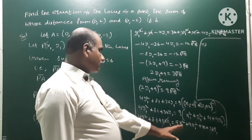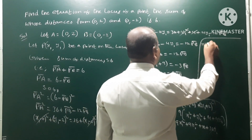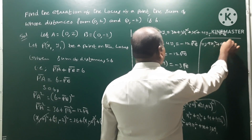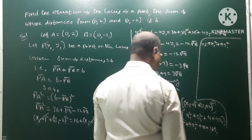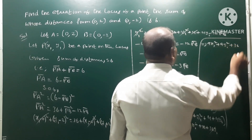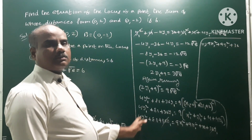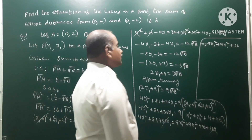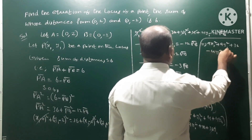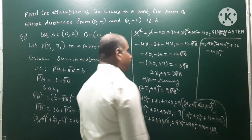Moving everything to one side: the right side is 9x1 squared plus 9y1 squared plus 36. Bringing the left side terms over: minus 4y1 squared and minus 81. That gives 9x1 squared plus 9y1 squared minus 4y1 squared plus 36 minus 81 equal to 0.